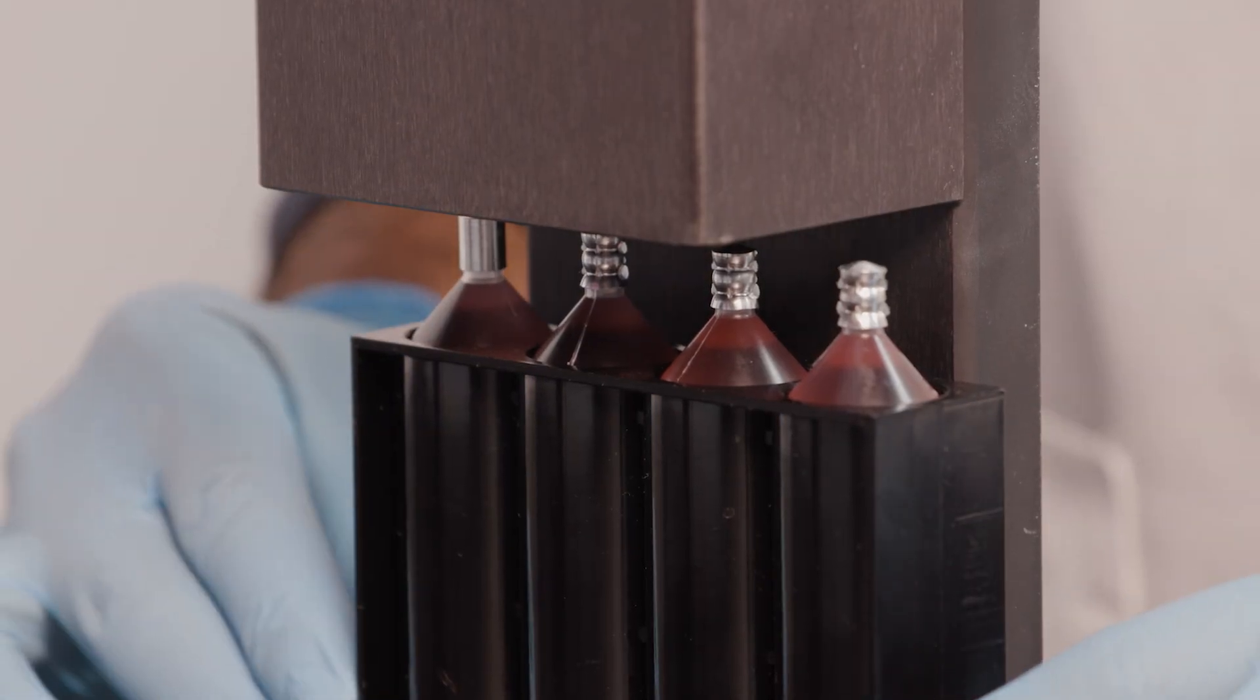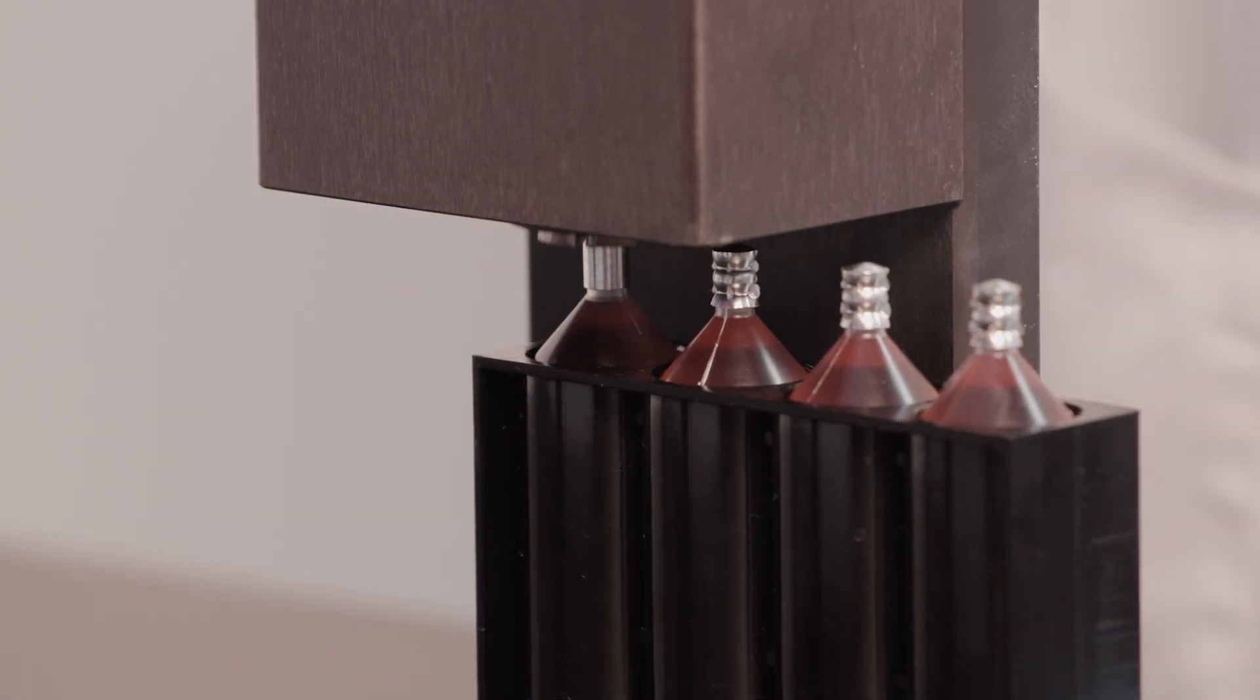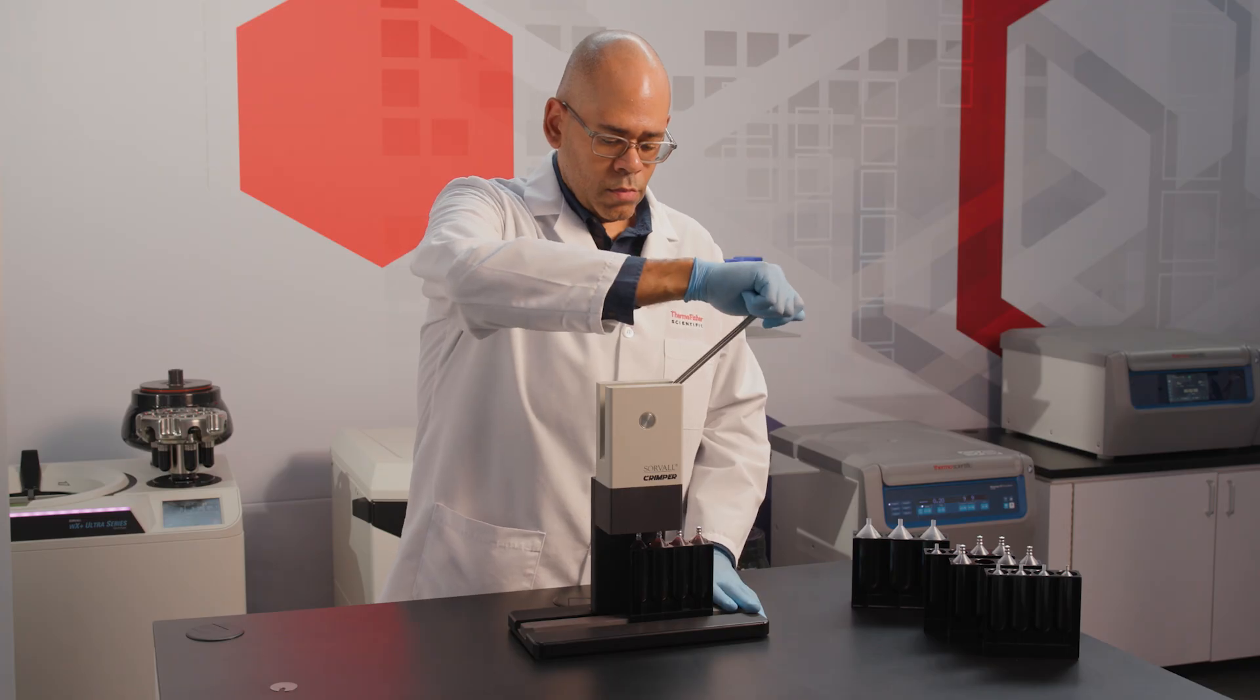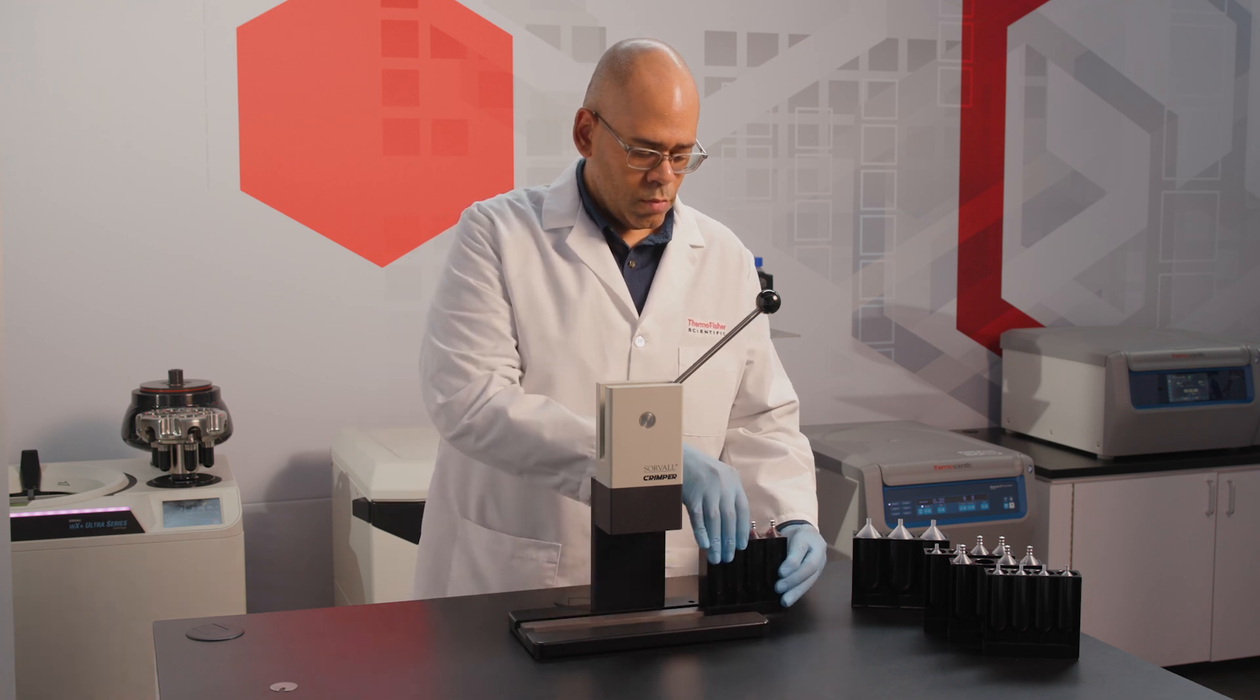Finally, slide the rack to move the next tube into position under the crimping collet. Again, the rack will click into place. Repeat the crimping action and continue until all the tubes have been sealed.